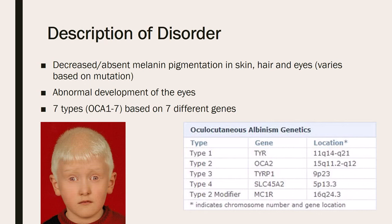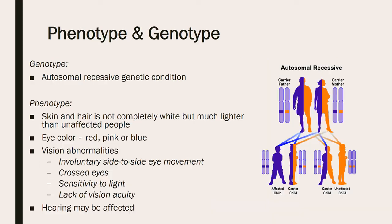This disorder is also characterized by abnormal development of the eyes, which causes vision abnormalities. Oculocutaneous albinism is an autosomal recessive genetic condition, which means the genotype of somebody who is affected by this disorder has two recessive alleles. Since it is autosomal, both males and females can be carriers of the trait or can be affected.